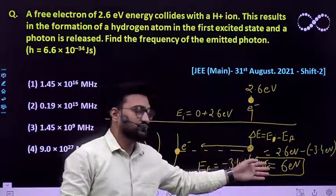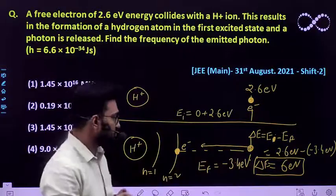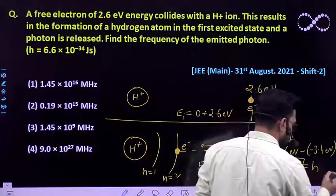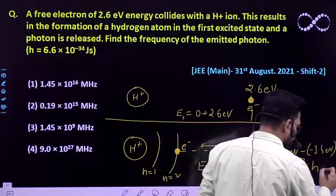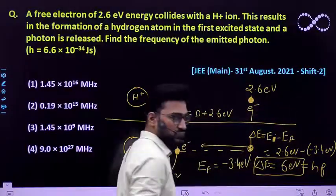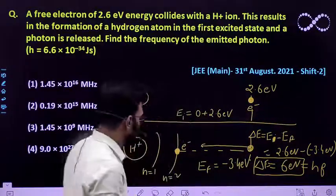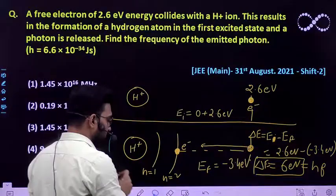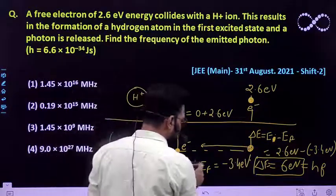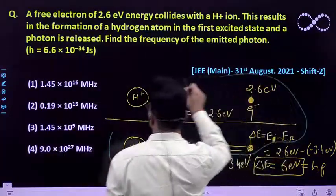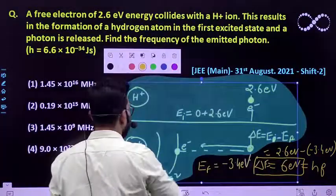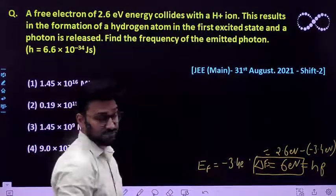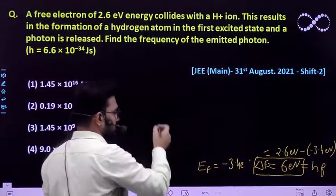This energy will be released in the form of radiation, so it must equal E = h times frequency. This is the standard relationship we already know. We will put in the values to find the expression for the frequency of radiation released.